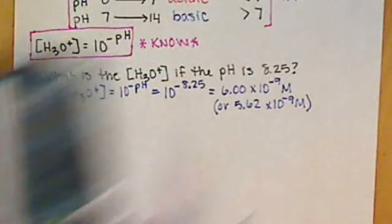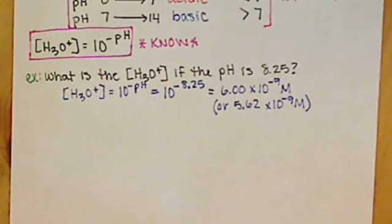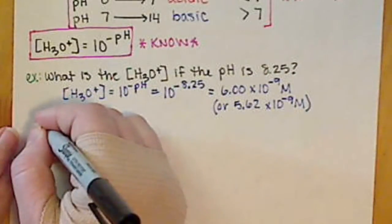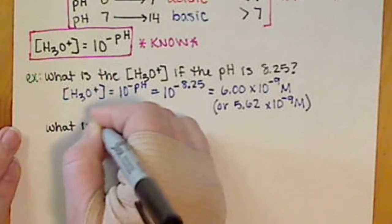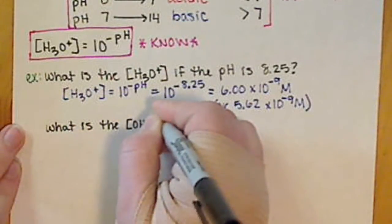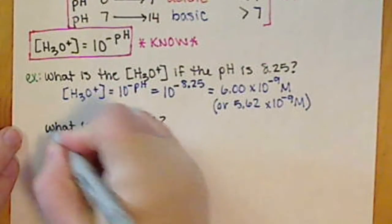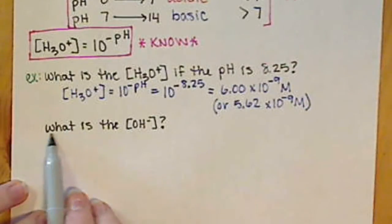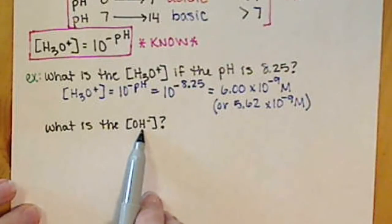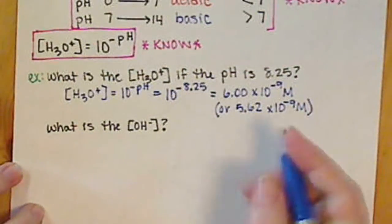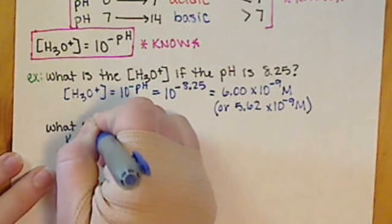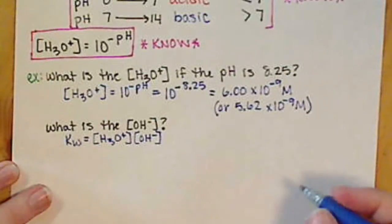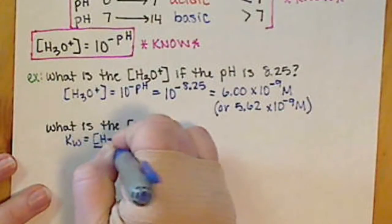I want to combine this question with our previous section on the ionization of water. What if we also ask: what is the concentration of OH⁻? If we're given a pH value, we can calculate the concentration of H₃O⁺, which is what we just did. Then, if we need the concentration of OH⁻, we use our Kw expression from the previous section.